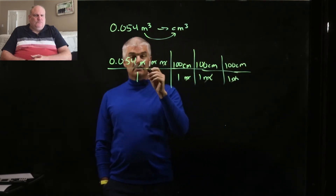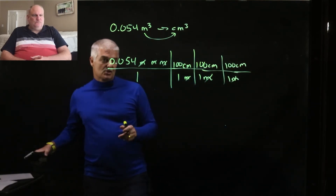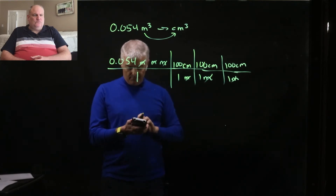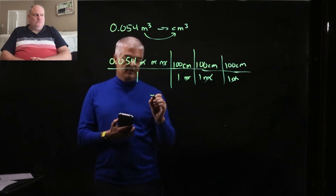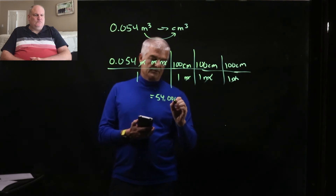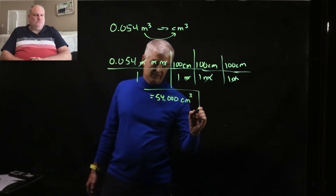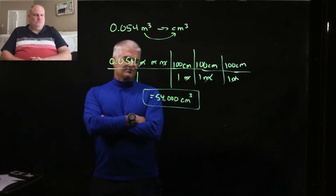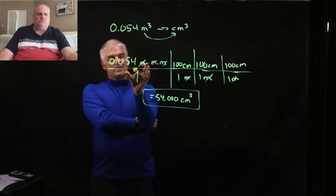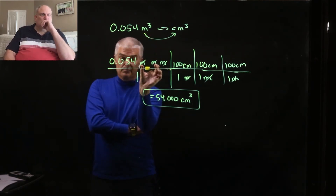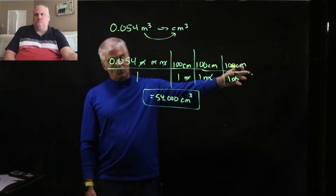The meter, meter, meter cancels and you're left with centimeter, centimeter, centimeter — better known as centimeter cubed. So I take 0.054 times 100 times 100 times 100, and I get 54,000 centimeters cubed. It's more simplified to write centimeter cubed rather than centimeter, centimeter, centimeter. If it's a square or cubic unit, you break them apart and cancel each one at a time.